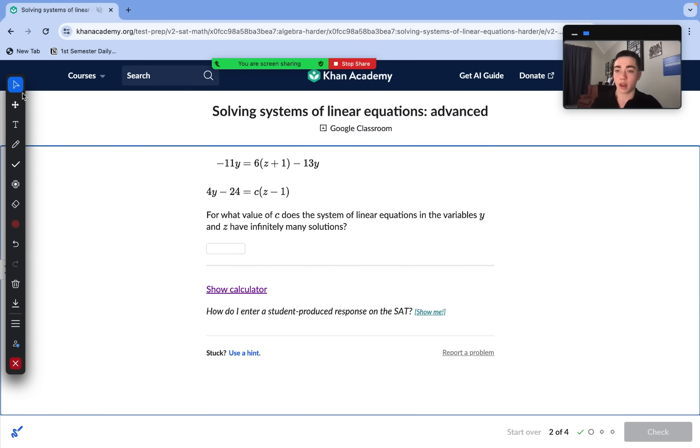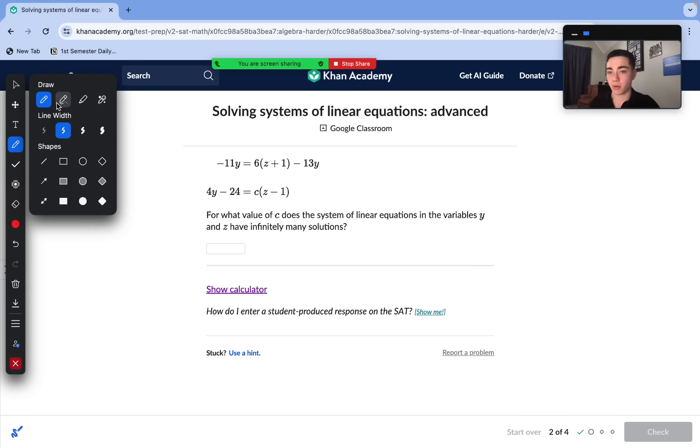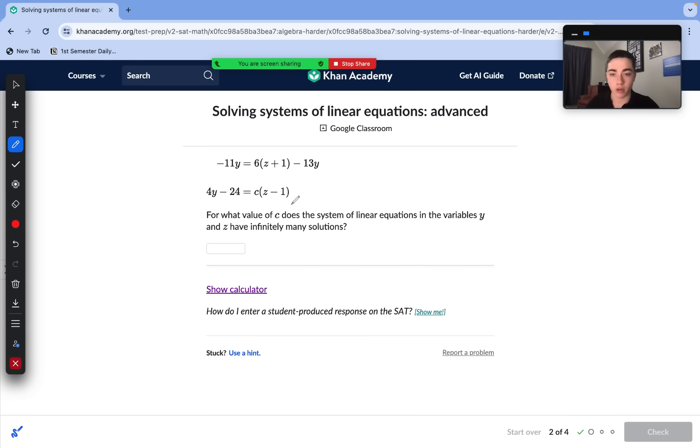On to our next one. We have some different variables here. Y and z but also a constant c. So what value of c does the systems of equations in the variables y and z have infinitely many solutions? So we discussed this in the prior video. Infinitely many solutions, we need coefficients and constants to be the same. Everything should cancel out when we solve through to get 0 equals 0.